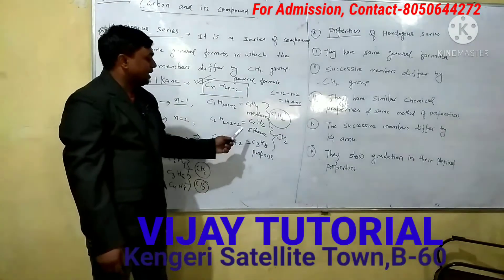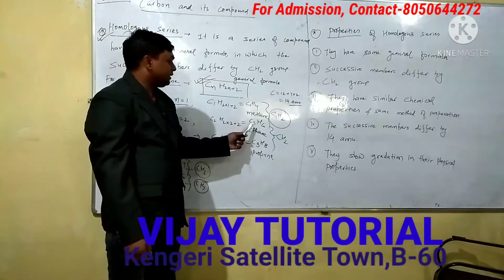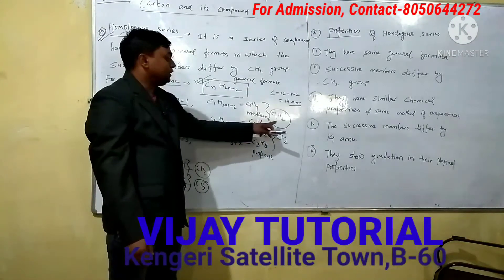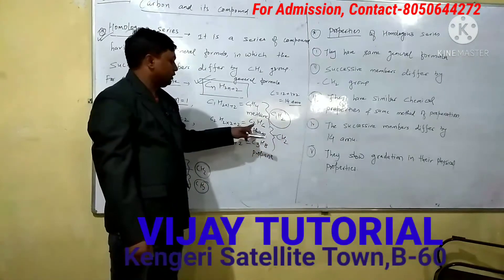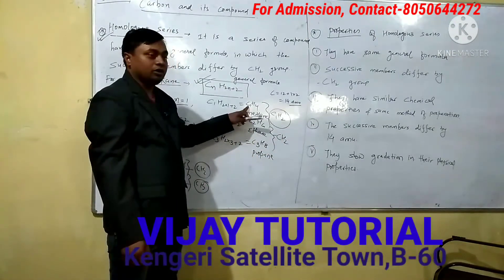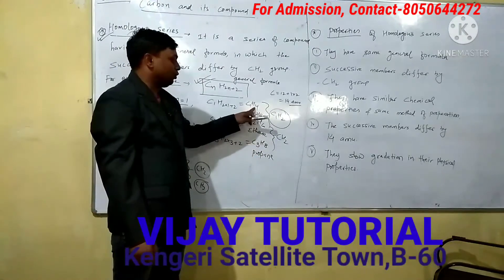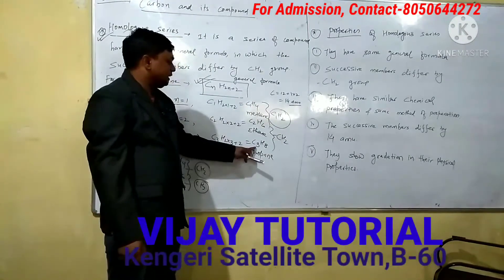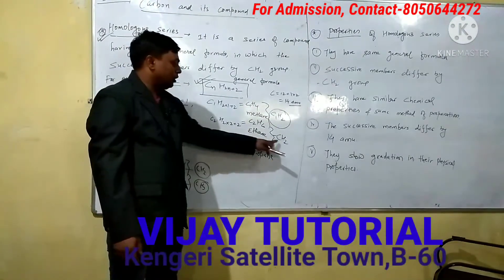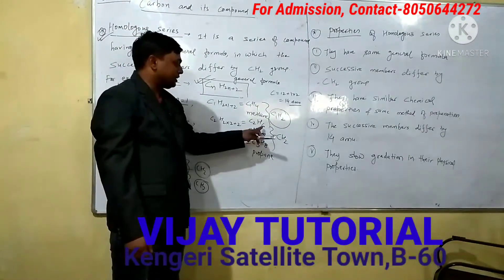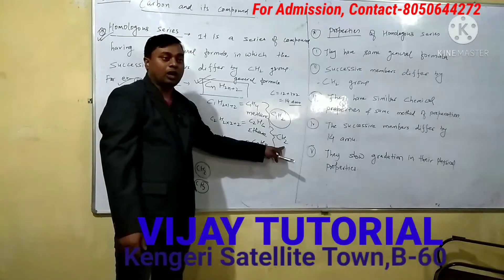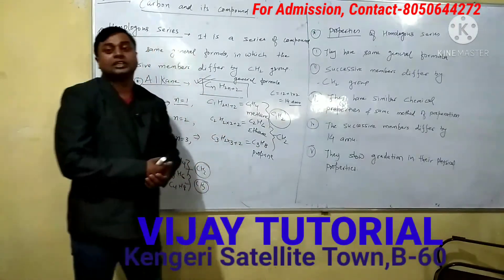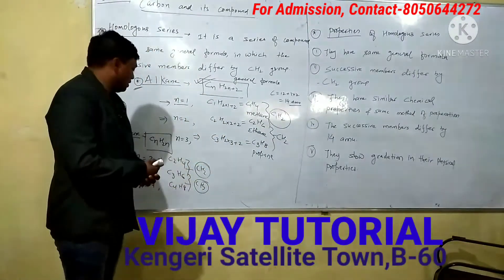So you can see very clearly that there is a difference of CH2 group. From n=1 to n=2: 2 minus 1 gives 1 carbon, and 6 minus 4 gives 2 hydrogens. Similarly, from n=2 to n=3: 3 minus 2 gives 1 carbon, and 8 minus 6 gives 2 hydrogens. So there is a difference of CH2 group between the successive members.